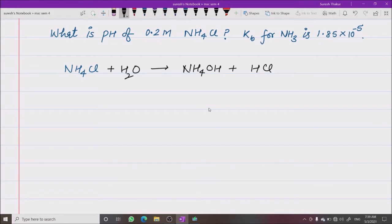Now ammonium hydroxide is a weak base and HCl is a strong acid. That means ammonium chloride is a salt of strong acid and weak base.